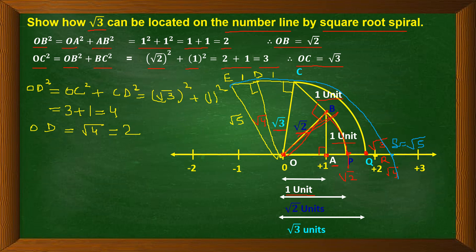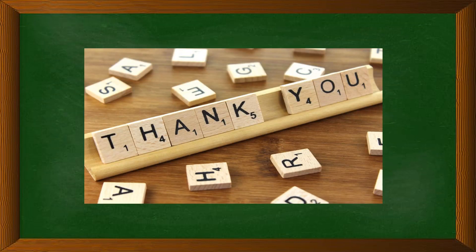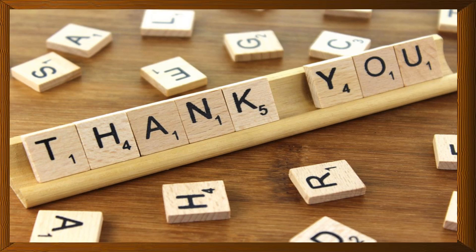This is how we can create a square root spiral using any positive integer and represent its square root on the number line. This is the classroom activity you will be asked to do in class, and this is how we construct the square root spiral. Hope you have understood the construction. Thank you everyone, have a great day ahead.